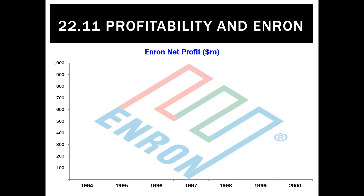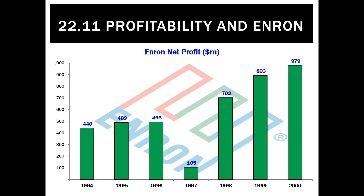Up until the year 2000, Enron had been very profitable. By the year 2000, it had made a net profit of $979 million. But what we've learned is that that doesn't mean they've got good profitability. Profitability is when we look at net profit by comparing it to another number, such as sales, assets, or capital.